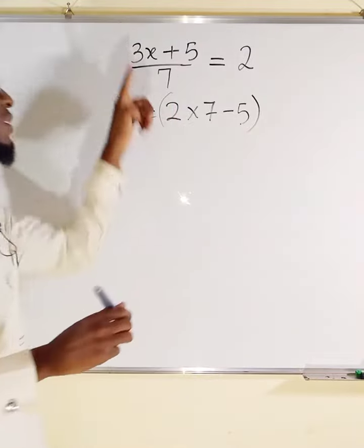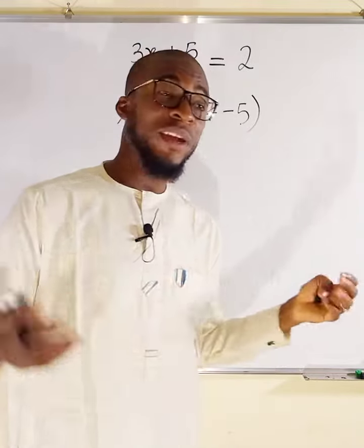And finally, you can see 3 is multiplying x, so we divide it.